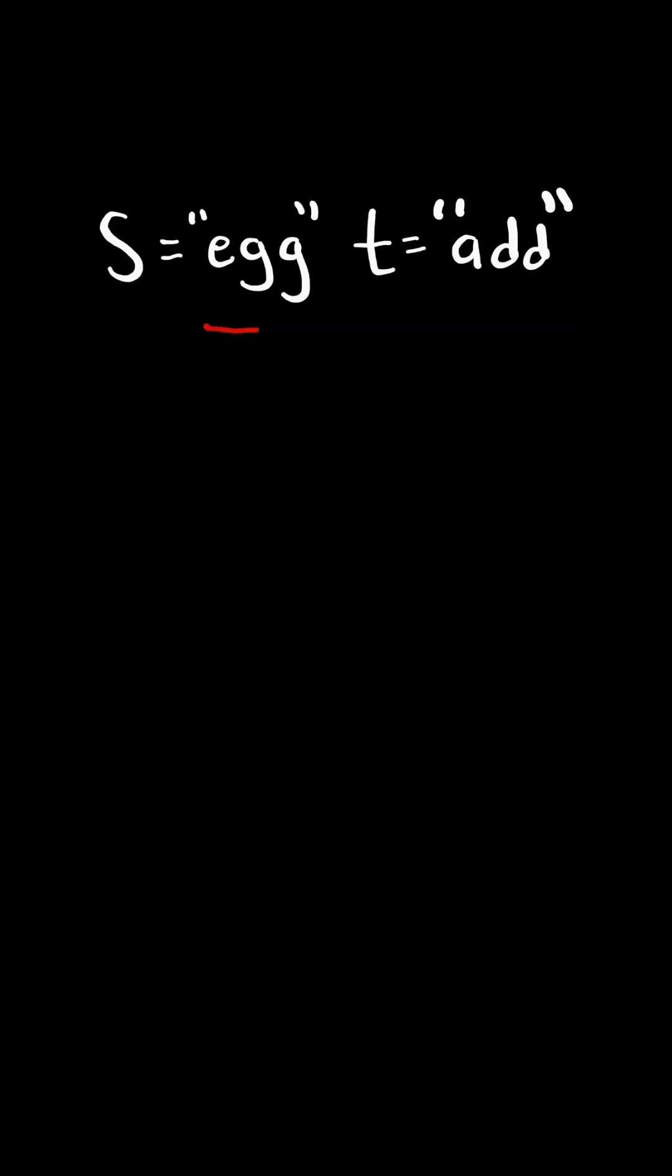Isomorphic strings. Return true if S and T are isomorphic, which means the characters in S can be replaced to get T. E can map to A and G can map to D.